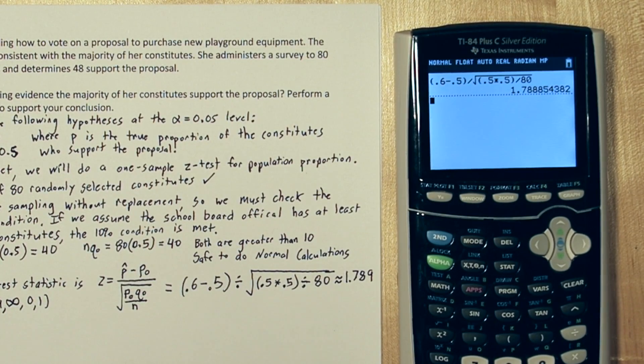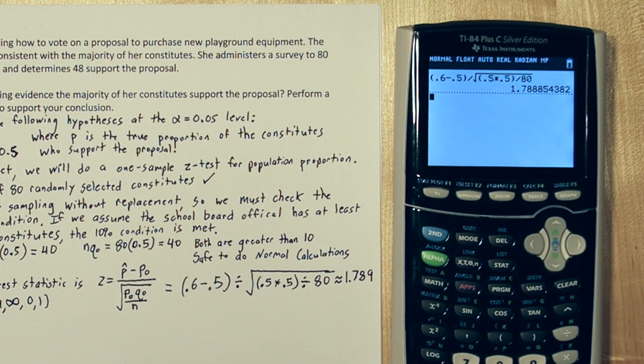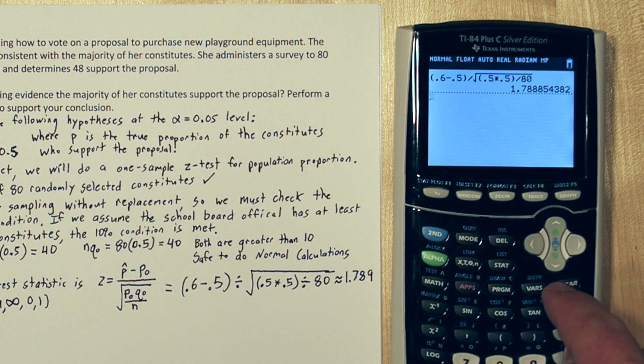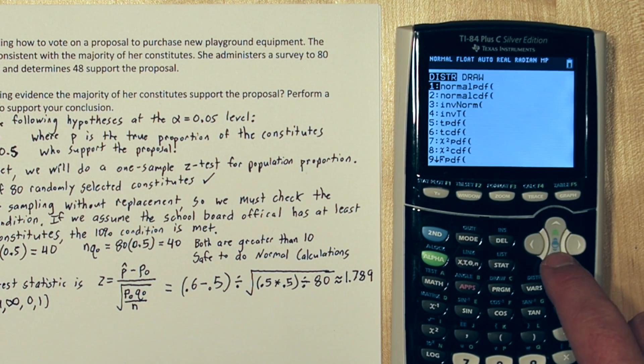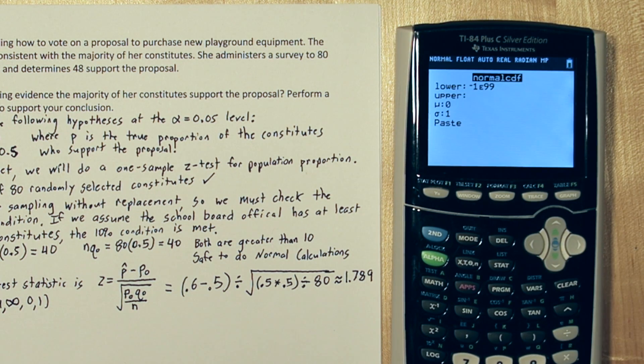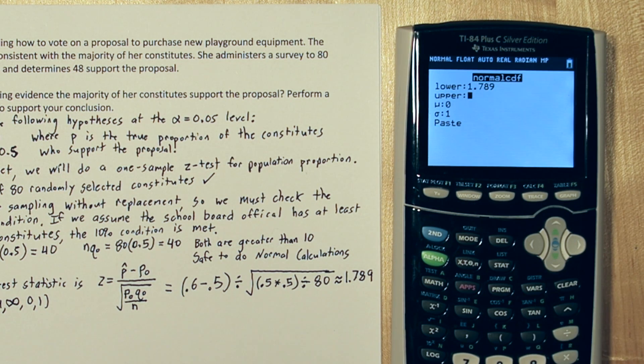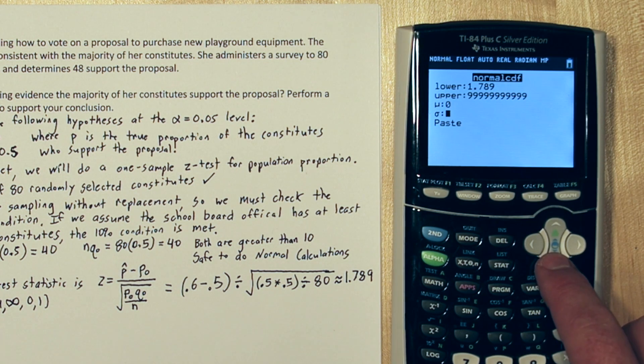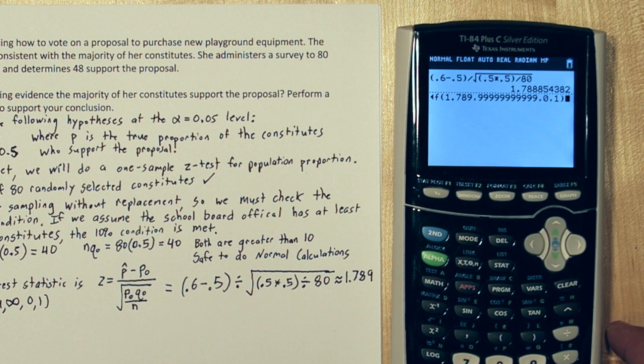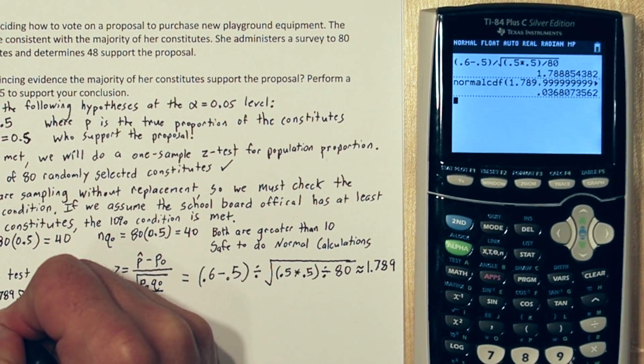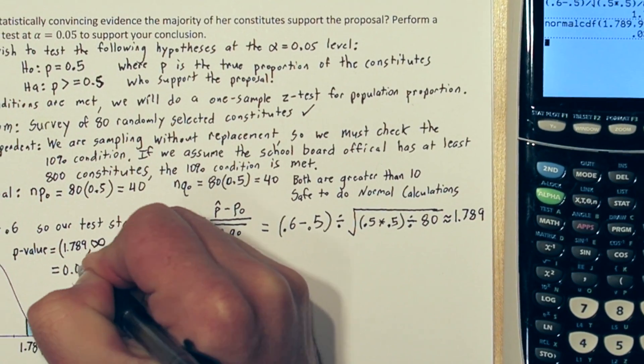So let's mark 1.789 on our normal distribution and shade this area. We can use inverse norm to find the p-value. So to do this on the calculator, we're going to press 2nd VARS. This is our distribution menu. We'll go to normCDF, and for our lower limit, we'll put 1.789. Our upper limit is going to be just a really large number, positive infinity, and we'll leave our mean and standard deviation as 0 and 1. Now when we press paste and then enter, we see our p-value is approximately .037.